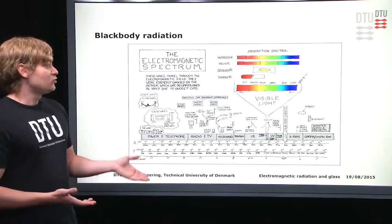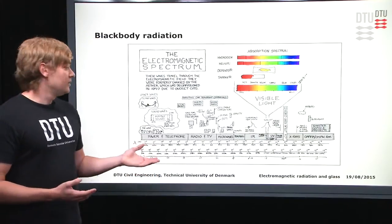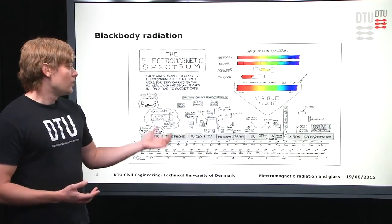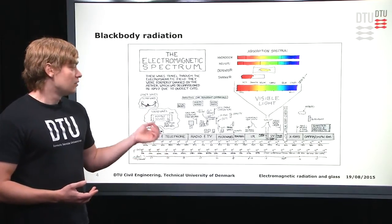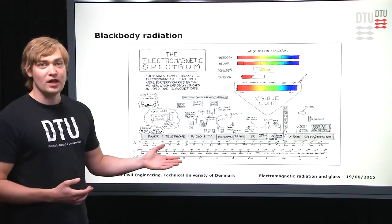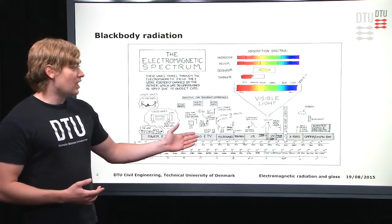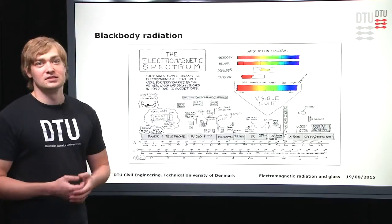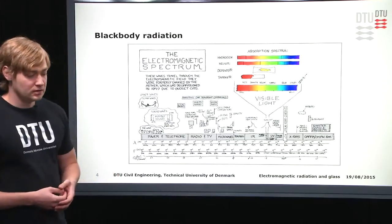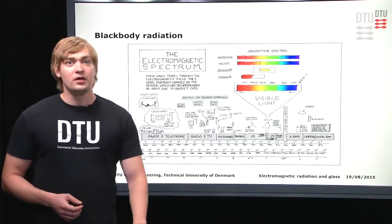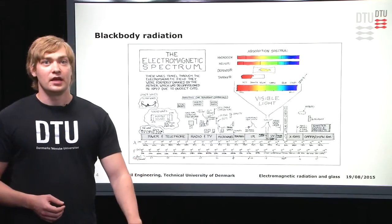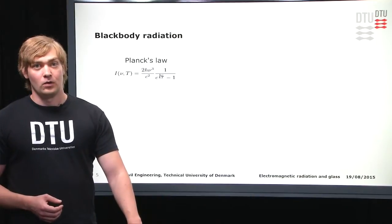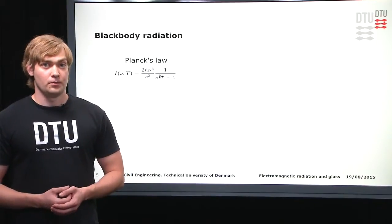The electromagnetic radiation spectrum spans from telephone, radio waves, microwaves, and infrared rays, over visible light to UV light, X-rays, and gamma rays. Blackbody radiation is governed by a law — Planck's law.